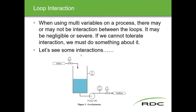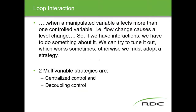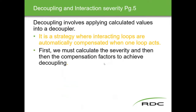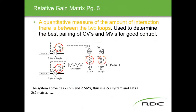We talked about interaction between loops and whether you can determine whether or not there's interaction. We also covered two types of multi-variable strategies: centralized control, which takes all inputs into one controller, manipulates them, and outputs a signal; and the decoupling control approach, which was the focus of most of the ILM. That's the decentralized approach where two measurements go into the same controller and outputs come out.